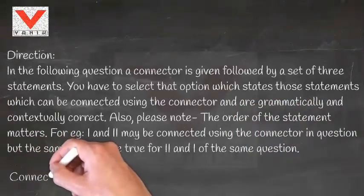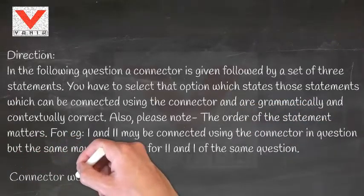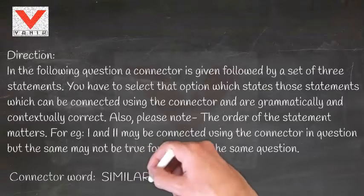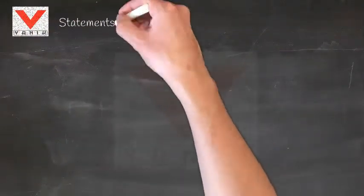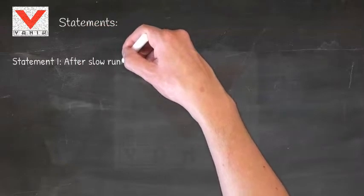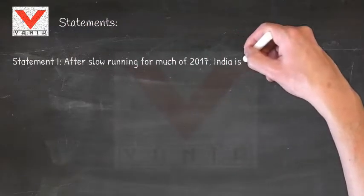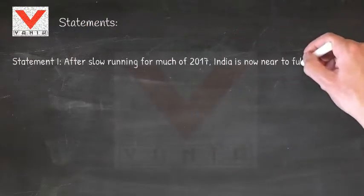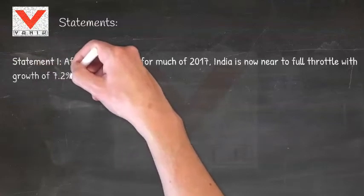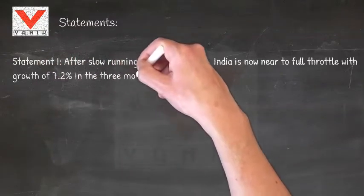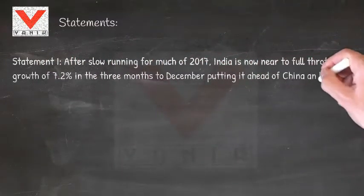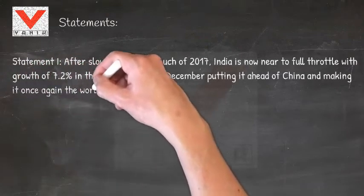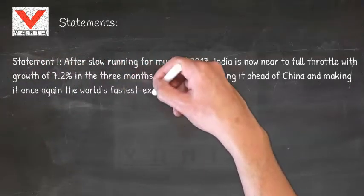Connector word: similarly. Statement 1: After slow running for much of 2017, India is now near to full throttle with growth of 7.2 percent in the three months to December, putting it ahead of China and making it once again the world's fastest expanding big economy.